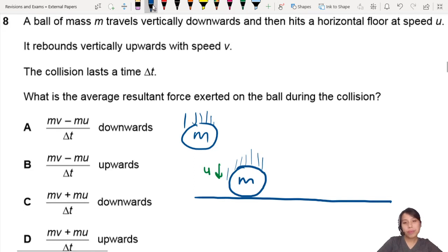Then it rebounds. The moment it rebounds is kind of like this but starting to go up. And this is going up velocity V. Collision lasts time delta T, which means this whole time where the ball is in contact, the collision is when the ball is touching the floor, it's time delta T.